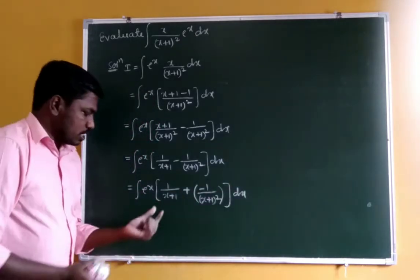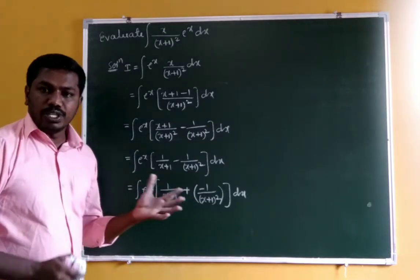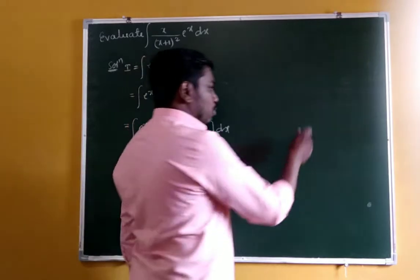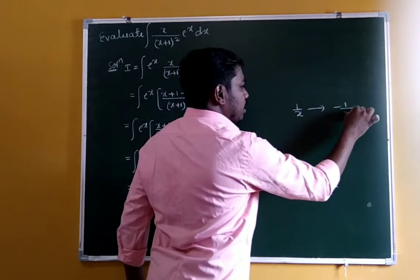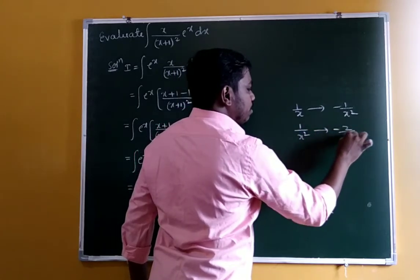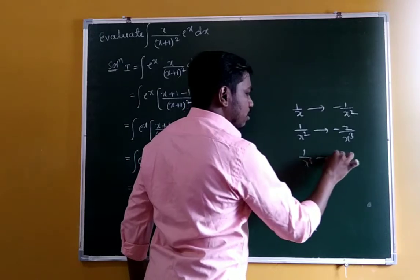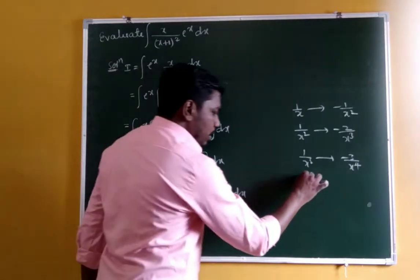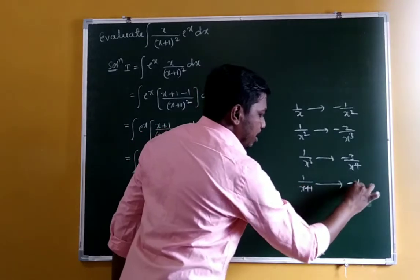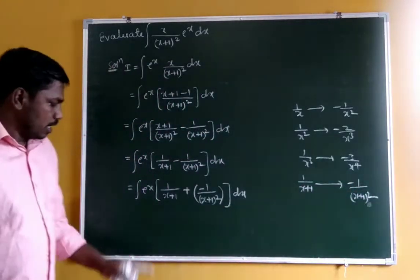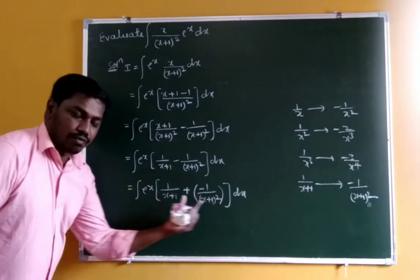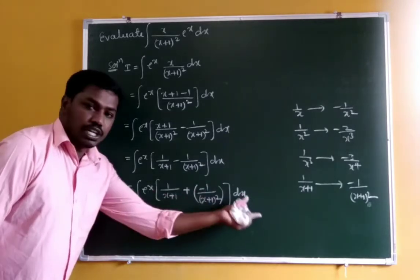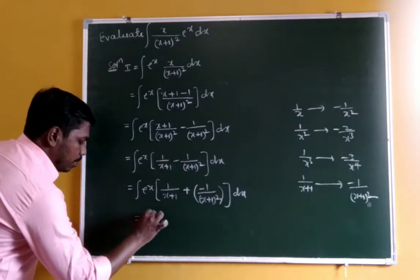Now check: the derivative of 1/(x+1) is minus 1/(x+1)². Recall that derivative of 1/x is −1/x², derivative of 1/x² is −2/x³, etc. Similarly, derivative of 1/(x+1) is −1/(x+1)². So this is f(x) and that is f'(x).